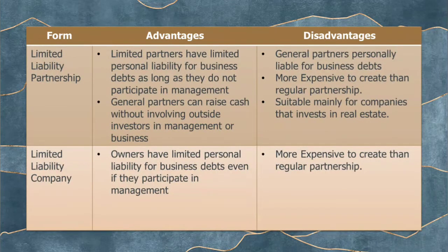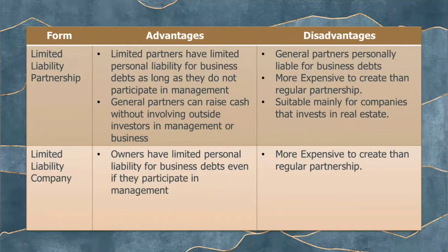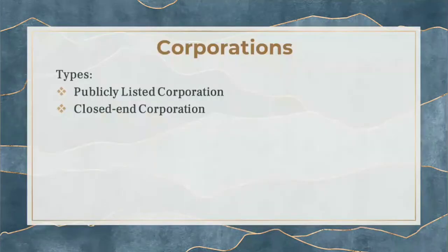There are other forms: limited liability partnerships and limited liability companies — you can read those on your own since they are already in your Org Man and FABM subjects. Our focal topic from the book is corporations. For corporations, there are two types: the publicly listed and the close-end corporation.